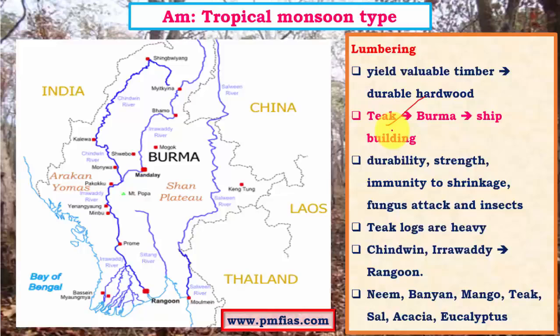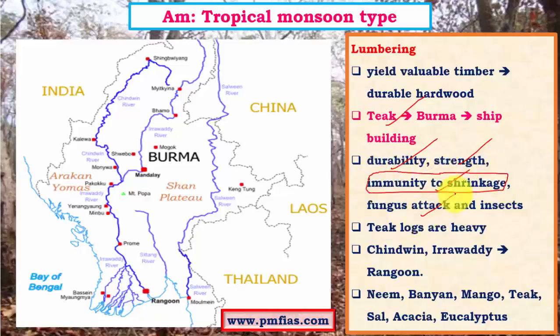The hardwood found in these forests is of very high strength, especially teak, which has important qualities like durability, strength, and resistance to humidity and shrinkage. Because of these properties, it is used in the shipbuilding industry. It is also resistant to fungus attack and insects. Fungus attacks happen during wet seasons, but since this wood is resistant to wet conditions, it is well-suited for shipbuilding.